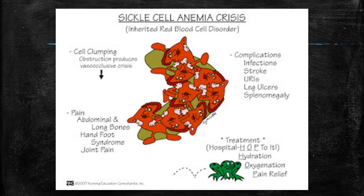Let's look at sickle cell crisis. A vaso-occlusive crisis is characterized by ischemia causing mild to severe pain that may last for minutes to days. It can affect the brain, the eyes, the bones, the liver, the spleen, the kidneys, the penis, the extremities, and the skin. Splenic sequestration — pooling of blood in the spleen — can result in death within hours if not treated; these kids need to be in the PICU. In kids with recurrent life-threatening splenic sequestration, splenectomy may be a life-saving measure. An aplastic crisis has profound anemia and is very life-threatening.